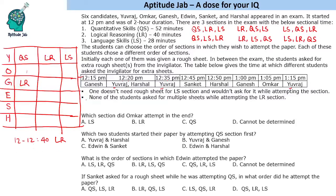Ganesh completed LR by 12:40 and takes another sheet at 1:00 PM. If he does LS next, that would run till 1:08, but he took a rough sheet at 1:00 PM and cannot do so during LS. So he did QS in the second slot and LS in the third slot. Ganesh's order: LR→QS→LS. Also, since LS appears last for both Yuvraj and Ganesh, LS cannot be last for anyone else — two slots are now filled for LS in the last position.